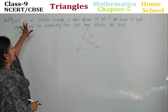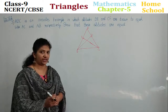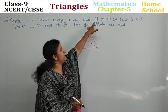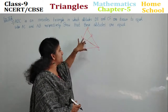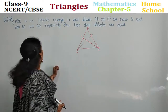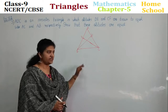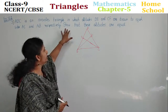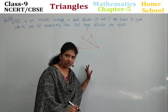ABC is an isosceles triangle. What do you mean by isosceles triangle? Two sides are equal. Altitudes BE and CF are drawn to equal sides AC and AB. In triangle ABC, the equal sides are AB and AC. What did they give? Show that these altitudes are equal. Understand the problem carefully.